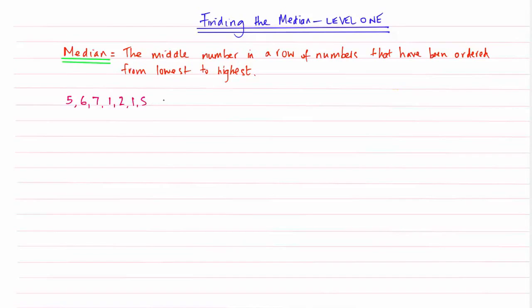So this method will work when there is 11, 13, 17, just an odd number of numbers. If you want to work out how to find the median when there are an even number of numbers in a row, you will need to watch finding the median level 2.